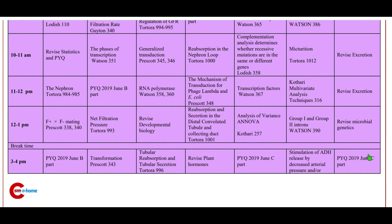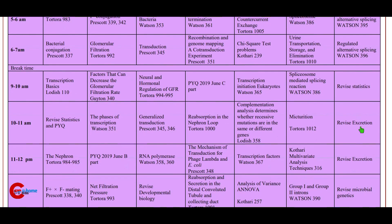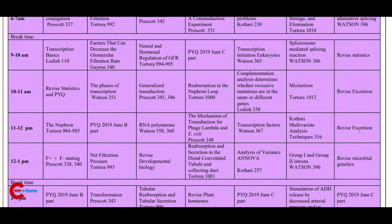Day 69 continued: 6 to 7 p.m. renal control of acid-base balance; 7 to 8 p.m. alternative splicing; 9 to 11 p.m. revise and prepare short notes.